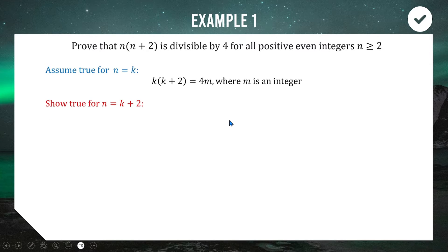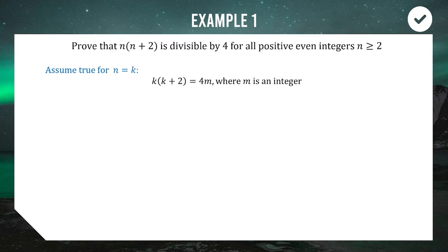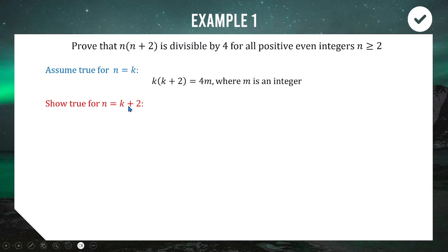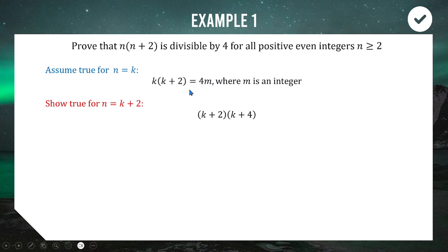Now we attempt to prove the next case. Because we're only looking at even numbers, the next even number after k is k+2, not k+1 (which would be odd). So instead of stepping up by one, we step up by two: k becomes k+2, and k+2 becomes k+4. Our expression for n = k+2 is (k+2)(k+4), and we need to show this equals four times something.